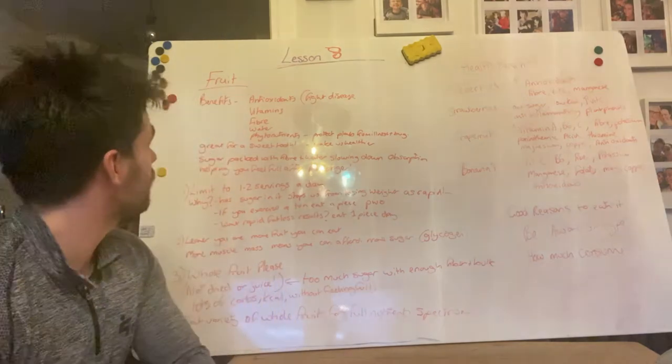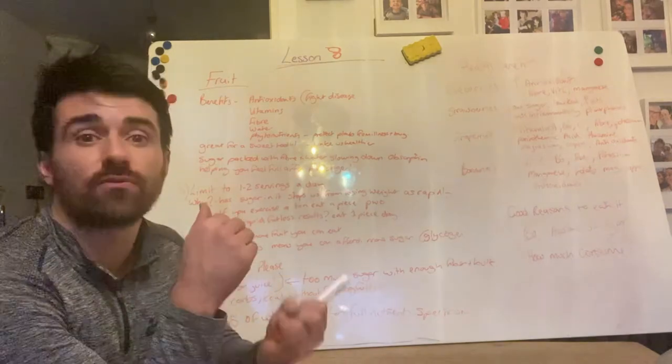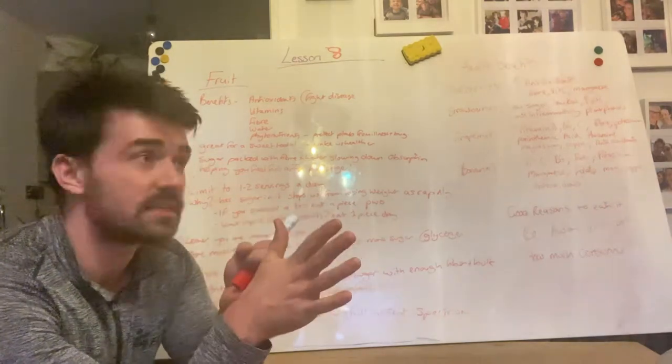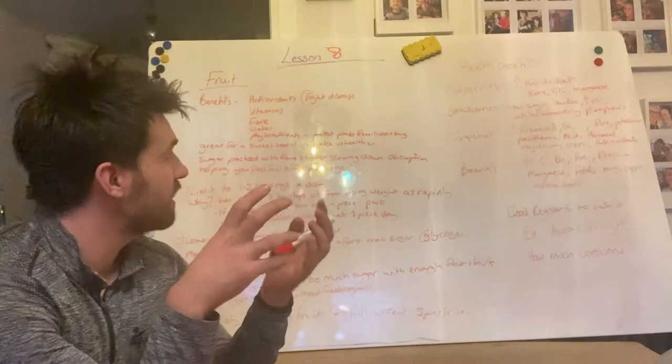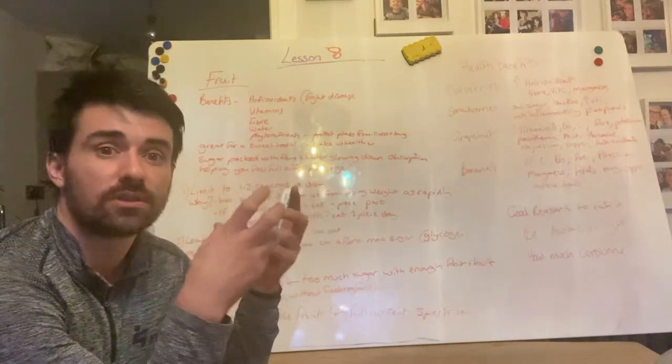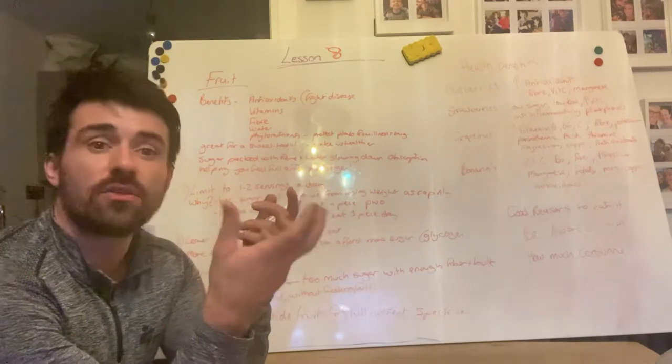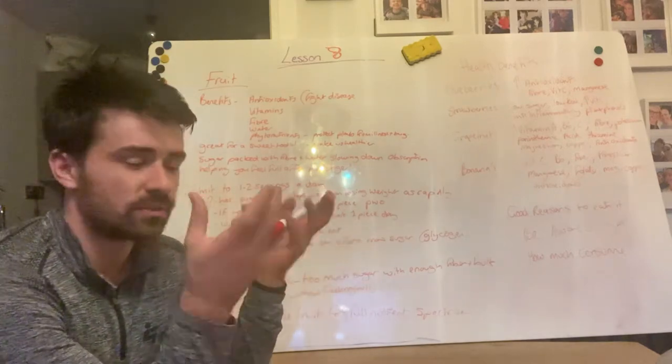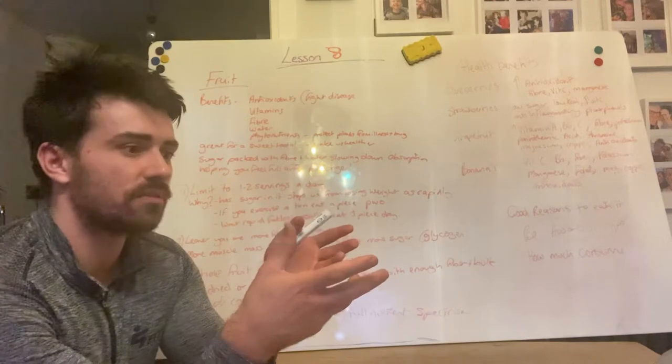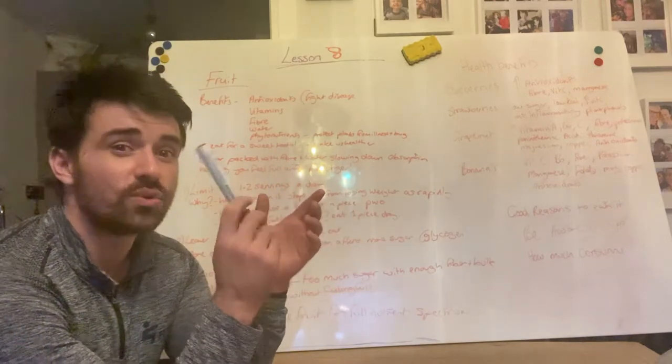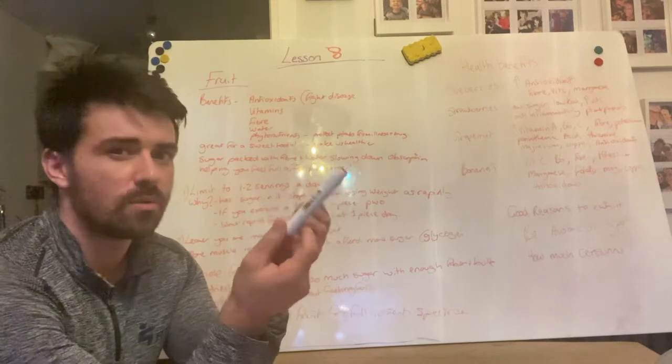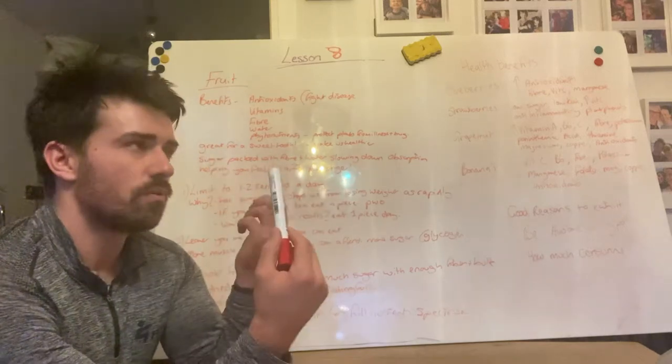Let's talk about one of my favorite things. The benefits of fruit: fruit is high in antioxidants which fight disease, vitamins, fiber, water, and phytonutrients, which basically protect plants from illness and bugs. As a result, they make us healthier as well. It protects the plant, stops the bugs from being able to eat it, and makes us healthy and superhuman in nature.